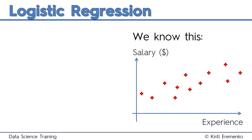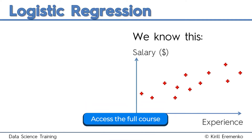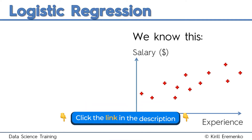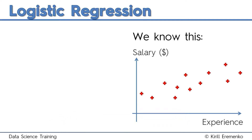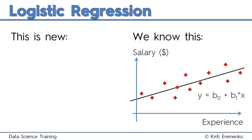When we have a scatterplot where on the horizontal axis we've got the independent variable and on the vertical axis we've got the dependent variable — for example, salary versus experience — how do we create a model? We use a simple linear regression. It puts a line through our data and that line is modeling our observations, so we can forecast things and compare our actual observations to our model.